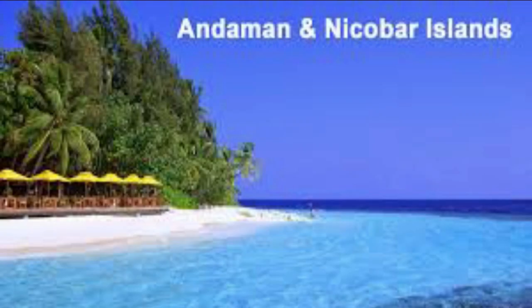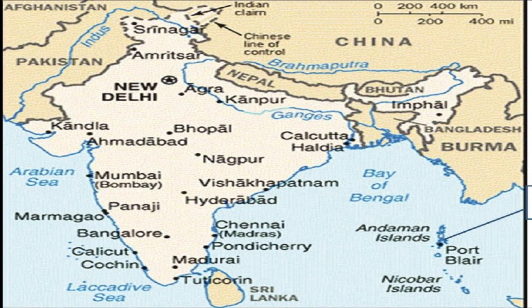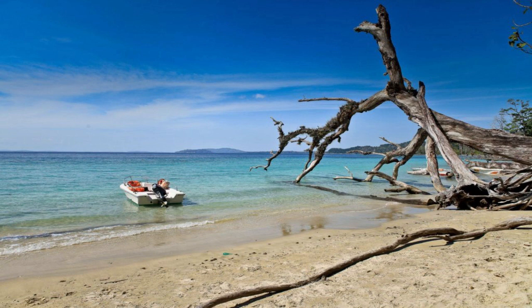Now let us discuss the union territory of Andaman and Nicobar Islands. This union territory consists of two groups of about 300 islands in the Bay of Bengal. The northern islands are known as the Andaman Islands, which include North, Middle, and South Andaman, known as Great Andaman. The southern islands are the Nicobar Islands, consisting of 19 islands. Little Andaman in the south is separated from the Nicobar Islands. The capital is Port Blair, and only a few of the islands are inhabited.